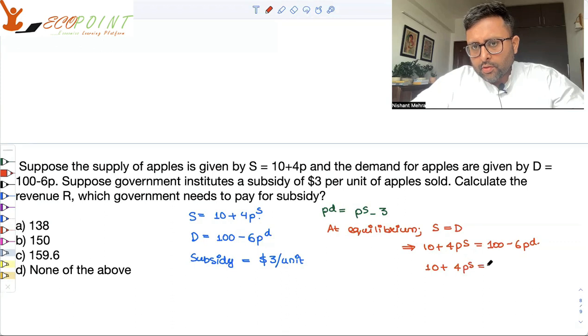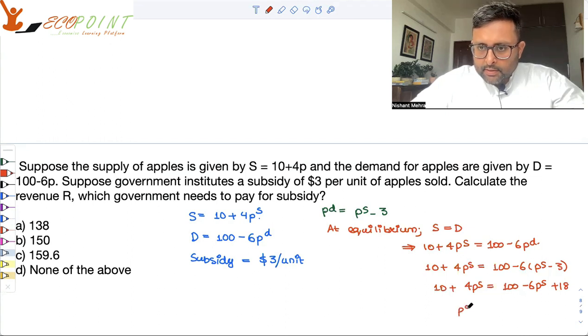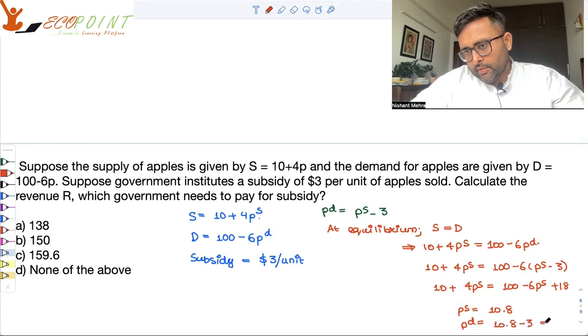Maybe I want to write everything in terms of ps. So pd is going to be ps minus 3. So 10 plus 4ps equals 100 minus 6 times ps minus 3 equals 100 minus 6ps plus 18. Once you solve this, your ps will come out to be 10.8, and pd would be ps minus 3, which is 7.8.